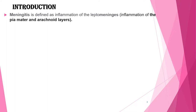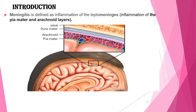Meningitis is defined as inflammation of the leptomeninges — the two inner linings of the meninges — including the pia mater and the arachnoid mater. As you can see on the image, there are three layers of meninges covering the brain and spinal cord: pia mater, arachnoid mater, and dura mater. The two inner layers are called the leptomeninges.